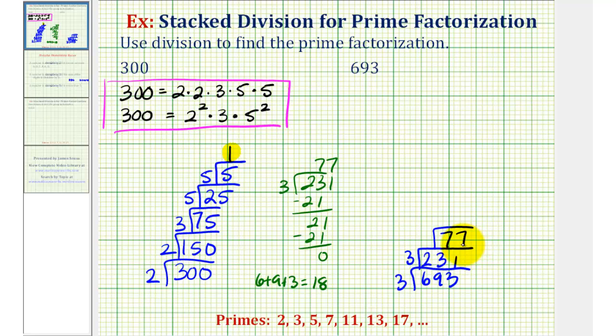77 is not divisible by five, but it is divisible by seven, so now we'll divide by seven. 77 divided by seven is equal to 11. And the next prime is 11. 11 is divisible by 11, so we'll divide by 11. And 11 divided by 11 is equal to one. And again, as soon as we have a quotient of one, we know we have found the prime factorization of the given number.